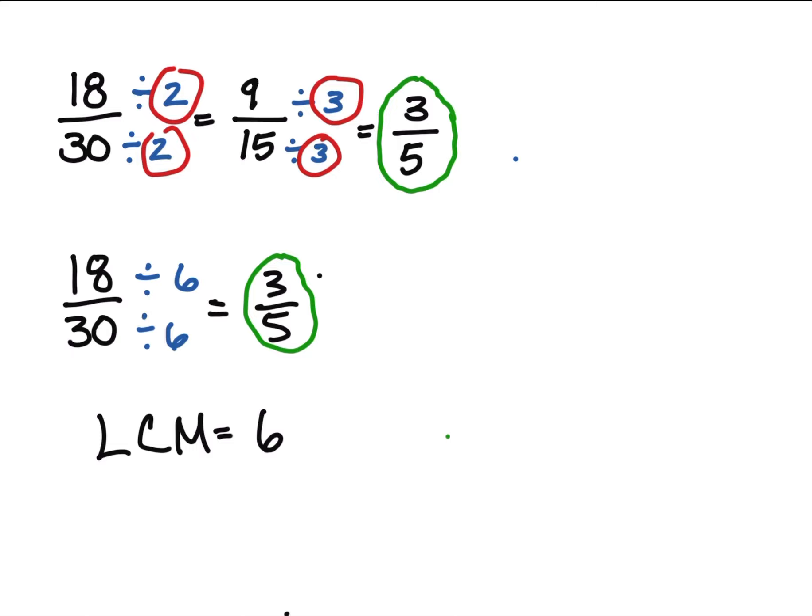The least common multiple that goes into both of those is 6. So in order to know that right off the top, you have to know your factors or multiples of these numbers. And multiples are what numbers multiply to get these numbers.